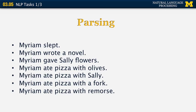'Miriam wrote the novel' is an instance of a transitive verb because 'wrote' takes a direct object. 'Miriam gave Sally flowers' is an example of a ditransitive verb because 'give' takes two nouns as arguments — give something to somebody, or give somebody something, so we can have two nouns without the preposition 'to.' In the earlier example 'Miriam ate pizza,' we have prepositional phrases like 'with olives' or 'with Sally,' which can be attached to either the nearest noun 'pizza,' as in the case of 'with olives.'